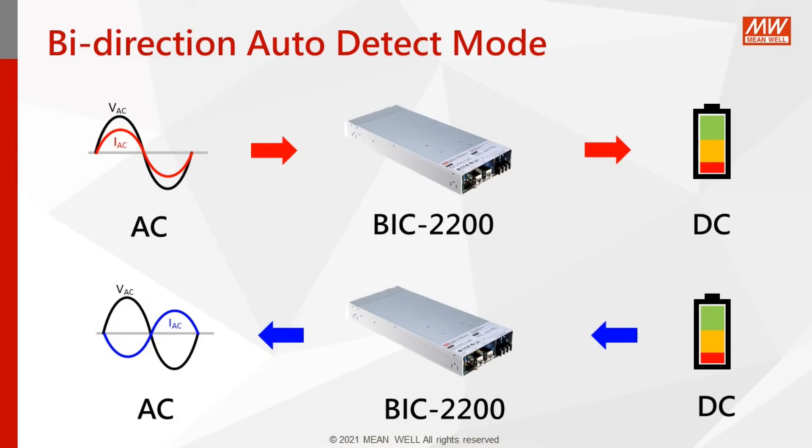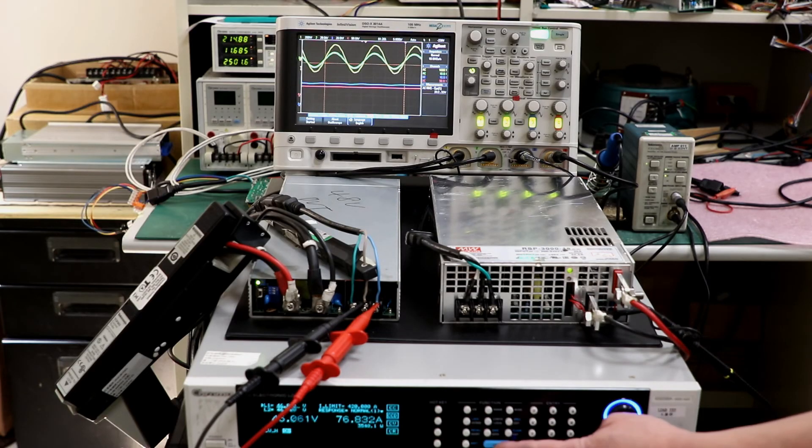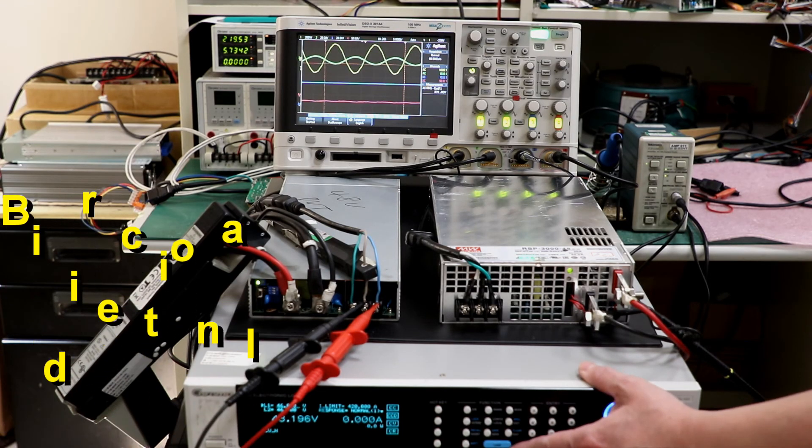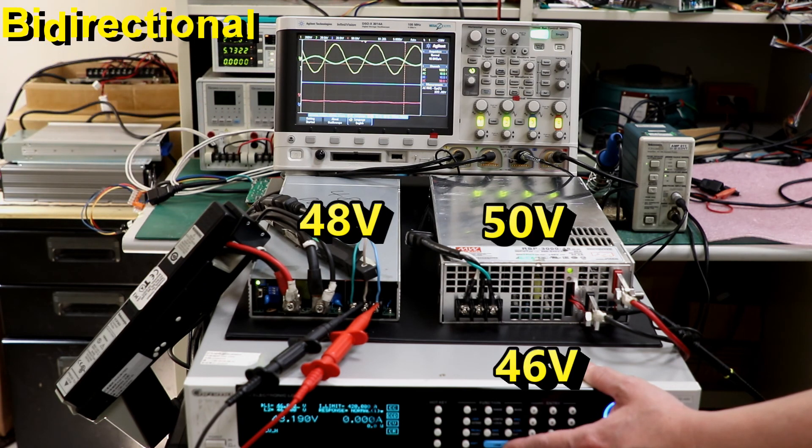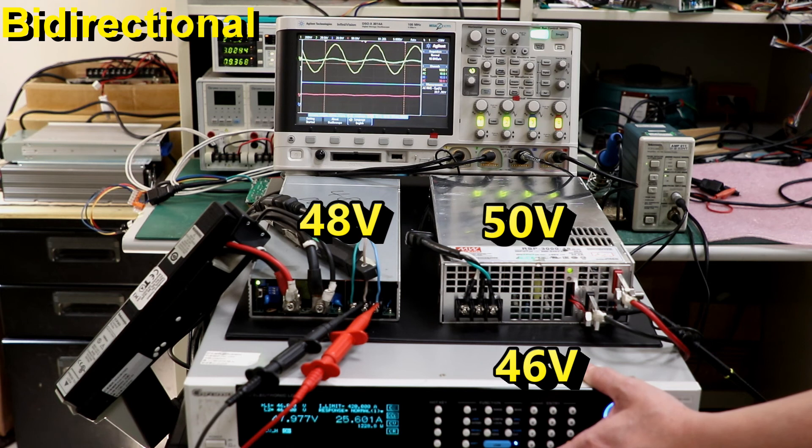And finally, demonstrating the whole function of the bi-direction auto-detect mode. At this time, we connect a DC electronic load set at CV mode and 46 volts and a RSP-3000 with 50 volts to the BIC-2200, 48 volts at the same time.